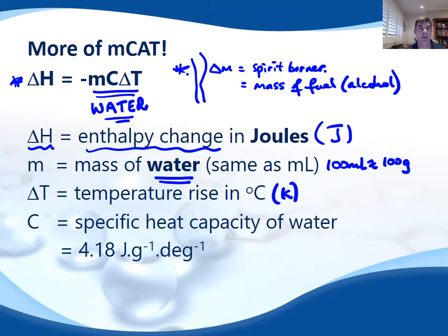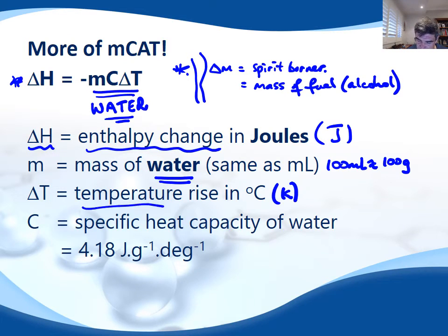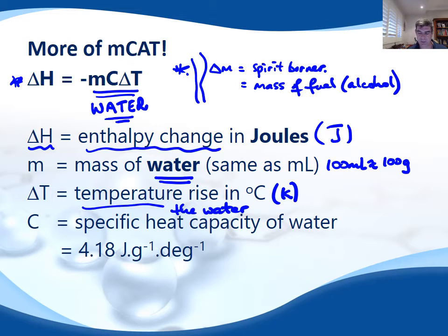The difference between two values is going to be the same in degrees Celsius as it is in Kelvin. And then we have the specific heat capacity of water — 4.18 joules per gram per degree Celsius or Kelvin.